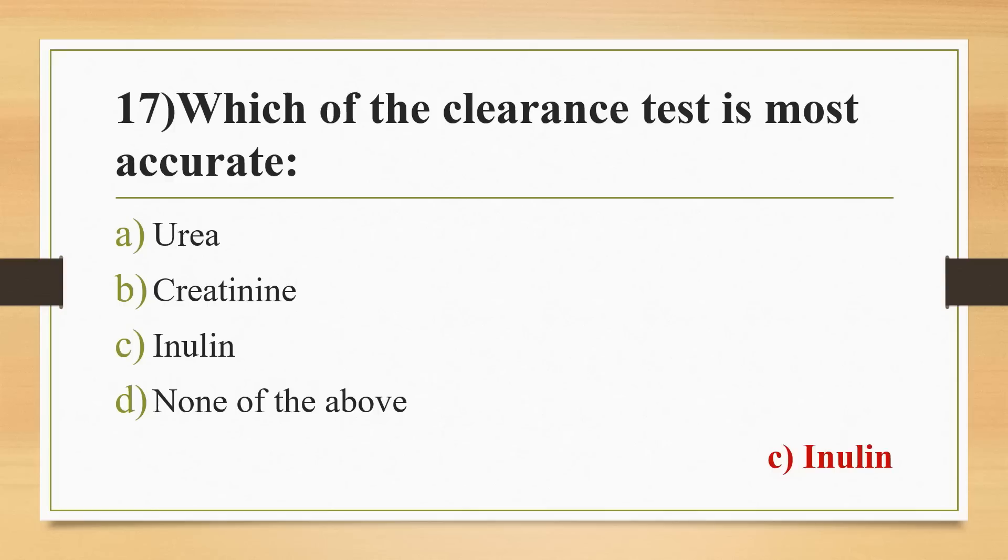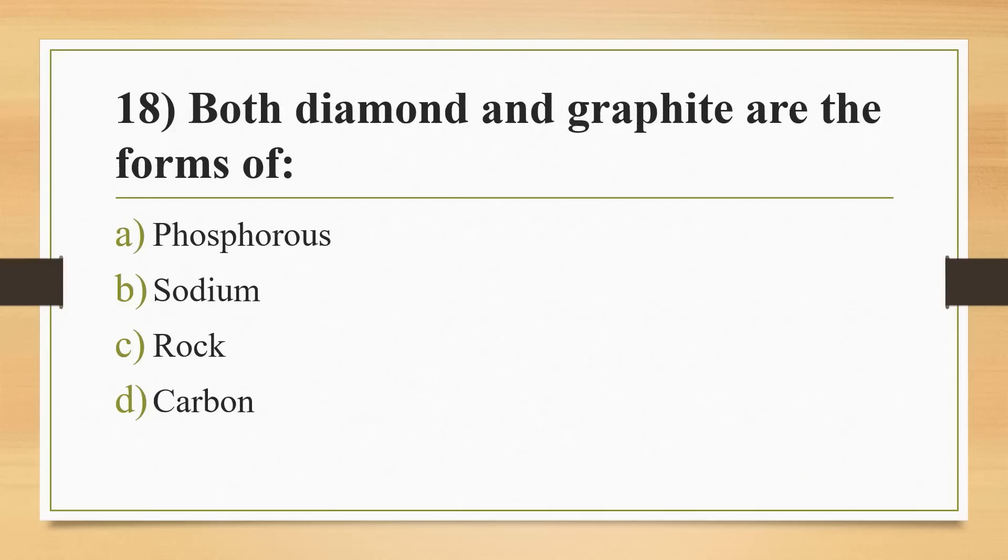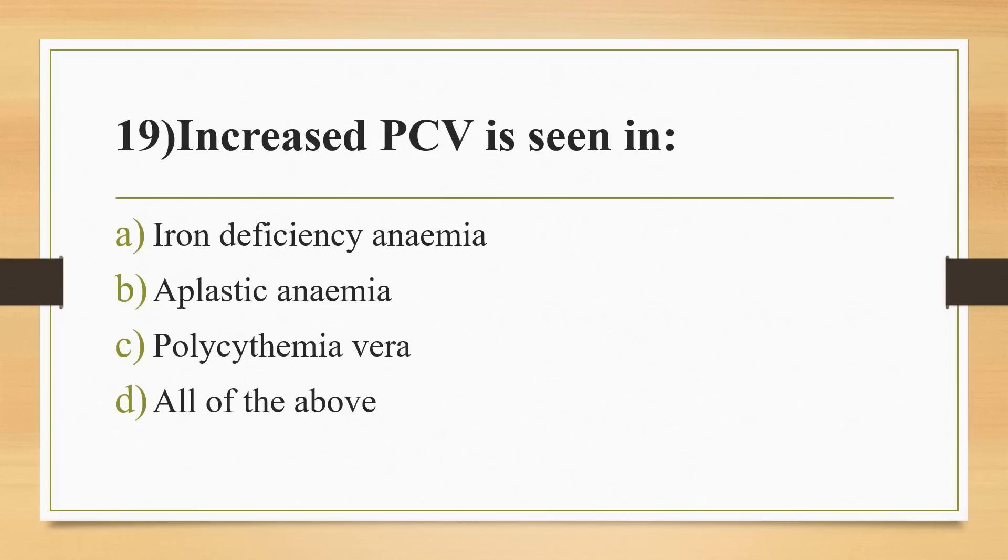Eighteenth question: both diamond and graphite are the forms of? Options: phosphorus, sodium, sulfur, or carbon. Answer is Option D, carbon. Nineteenth question: increased PCV is seen in? Options: iron deficiency anemia, aplastic anemia, polycythemia vera, or all of the above. Answer is Option C, polycythemia vera.